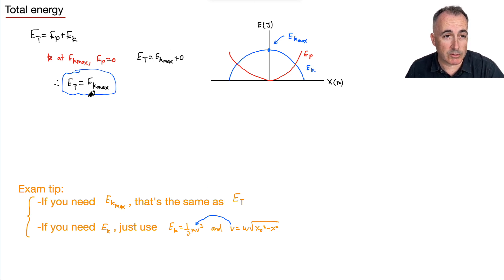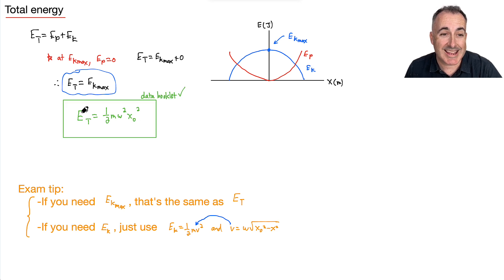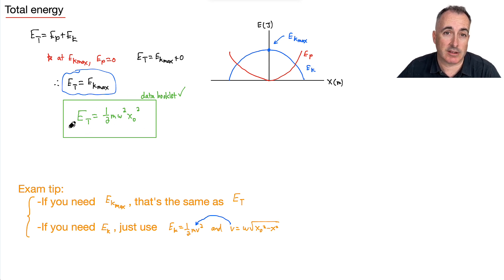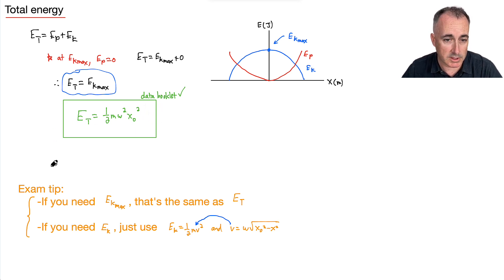So that's our exam tip. The good news is you're given the equation for ET in your data booklet. ET equals one half m omega squared x-zero squared — and this is the same as what we found for EK max. So if you need ET, you have it in the data booklet. If you want EK max, it's actually the same equation. And if you need EK at a specific position, use one half mv squared and substitute in v. So we've got all the equations we need.